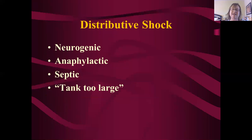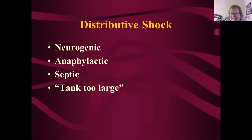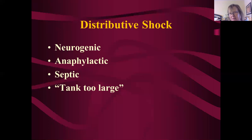Distributive shock is the third category. Think of the analogy: the big bag with the tiny cabinet — the vessel becomes too large. To recap: hypovolemic shock is no gas in the tank; cardiogenic shock is gas in the tank but the engine won't work; distributive shock means the engine works and there's gas in the tank, but you can't distribute it — you can't get it to where it needs to go. There are three underlying mechanisms: neurogenic shock, anaphylactic shock, and septic shock.